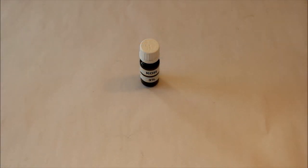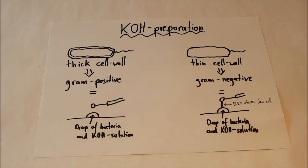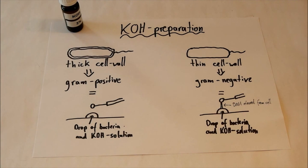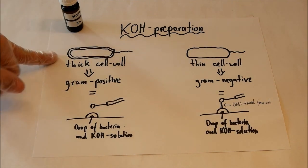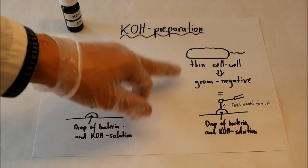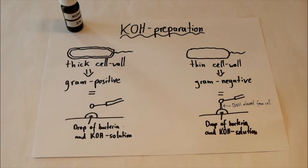So the second method is potassium hydroxide preparation. This is equal to the gram stain, because you can find out whether the bacteria, the colony is gram positive or gram negative. The theory is that gram positive bacteria have a thick cell wall, and the gram negative bacteria have got a thin one.